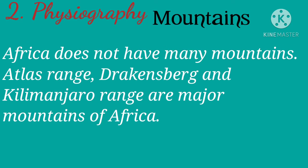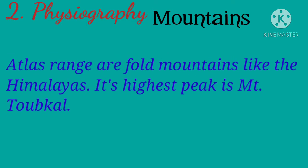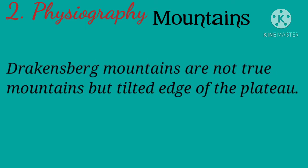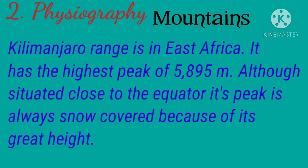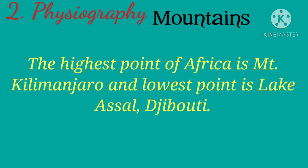Africa does not have many mountains. The Atlas Range, Drakensberg, and Kilimanjaro Range are the major mountains. The Atlas Range are fold mountains like the Himalayas; its highest peak is Toubkal. The Drakensberg mountains are not true mountains but the tilted edge of the plateau. The Kilimanjaro Range in east Africa has the highest peak of 5,895 meters; although close to the equator, its peak is always snow-covered due to its great height. Mount Kilimanjaro is the highest point and Lake Assal is the lowest point in Africa.